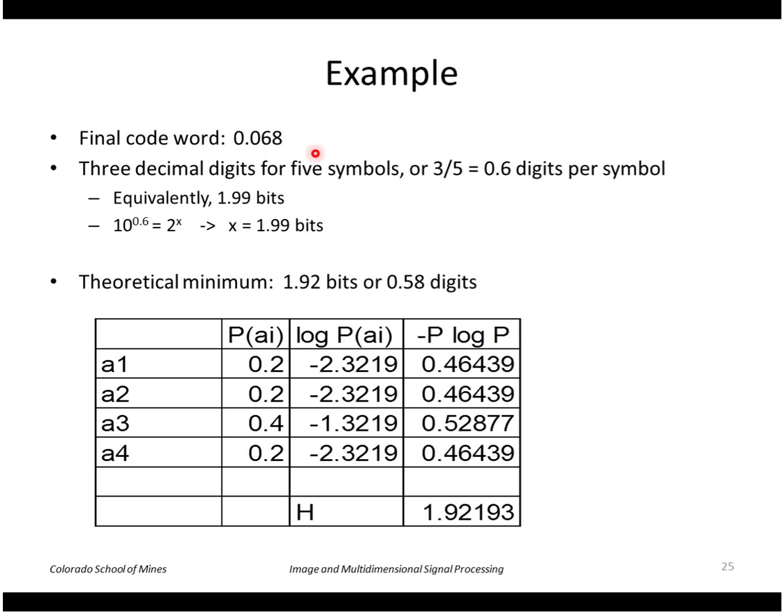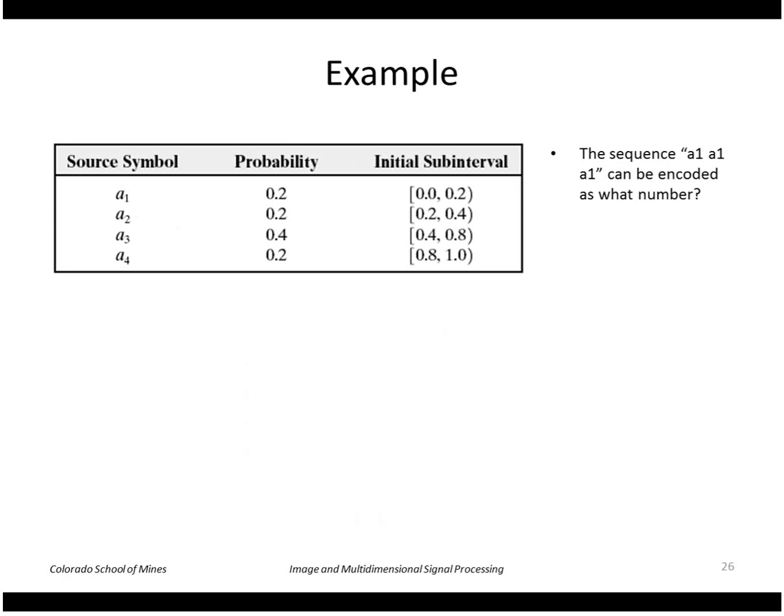If we just look at the decimal digits, there's three decimal digits after the decimal point, so three digits to encode five symbols is 0.6 digits per symbol. Converting that to the number of bits per symbol using the relationship between decimal and binary, we find that x would be 1.99 bits. Comparing that to the theoretical maximum, the theoretical maximum is 1.92 bits.